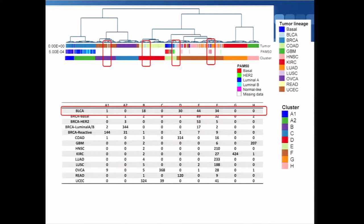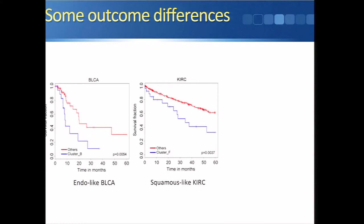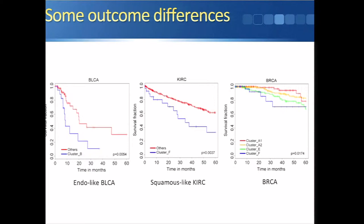Bladder is a very different animal in this picture. Bladder is spread out across four different clusters, contrary to mRNA clusters where bladder appears mostly in a single cluster. Looking at outcome differences, bladder samples that clustered with endometrial cancers have a much worse prognosis than the remaining bladders. Similarly, in kidney cancer, the squamous-like kidney cancers have worse prognosis than the remaining kidney cancers.